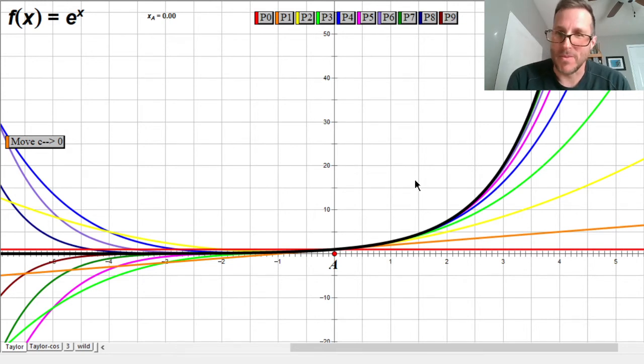What if I had an infinite number of terms? I could just keep going and get an infinite number of terms. How many places would the infinite polynomial agree with e to the x? Everywhere. Yeah, that's right. Everywhere. The infinite degree polynomial with infinite terms is exactly the same as e to the x everywhere. That's wild. That is completely wild.